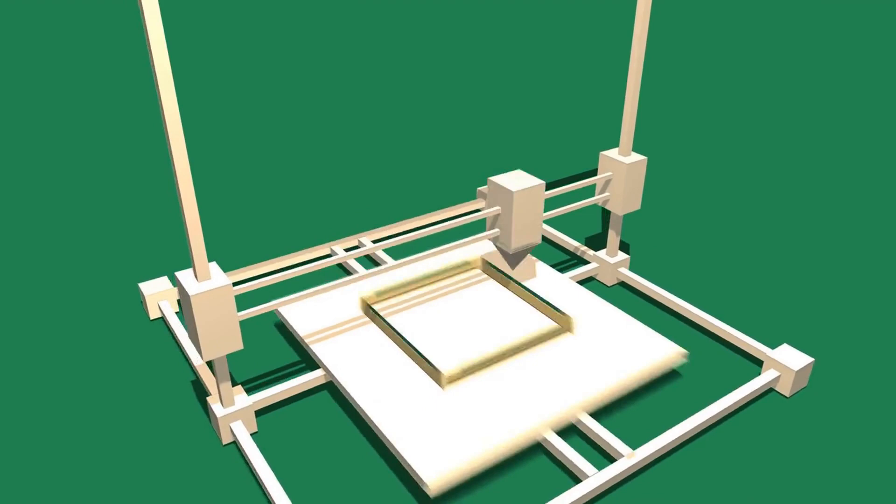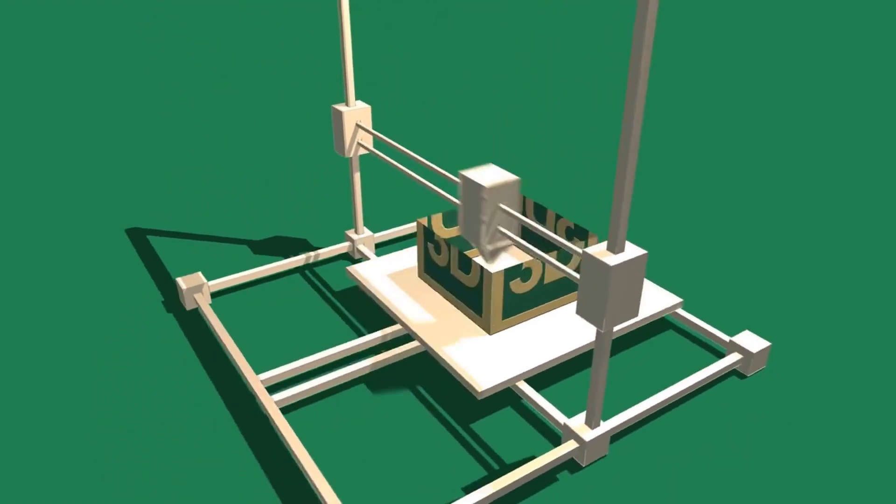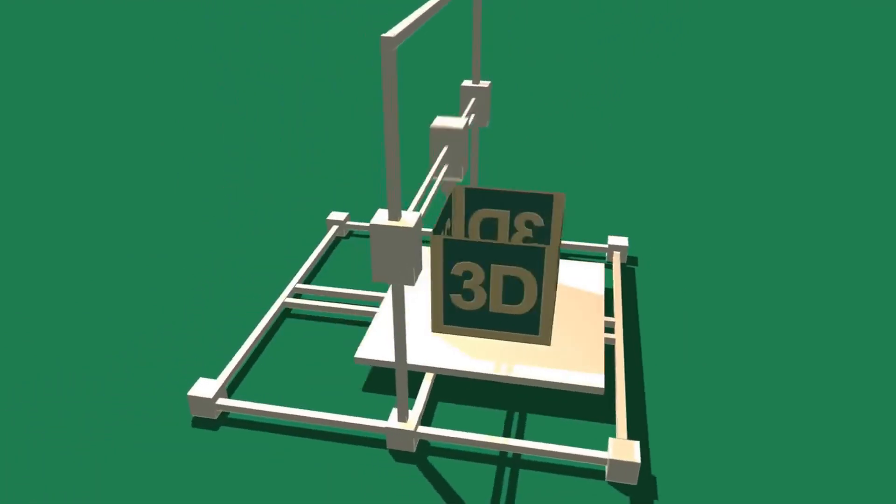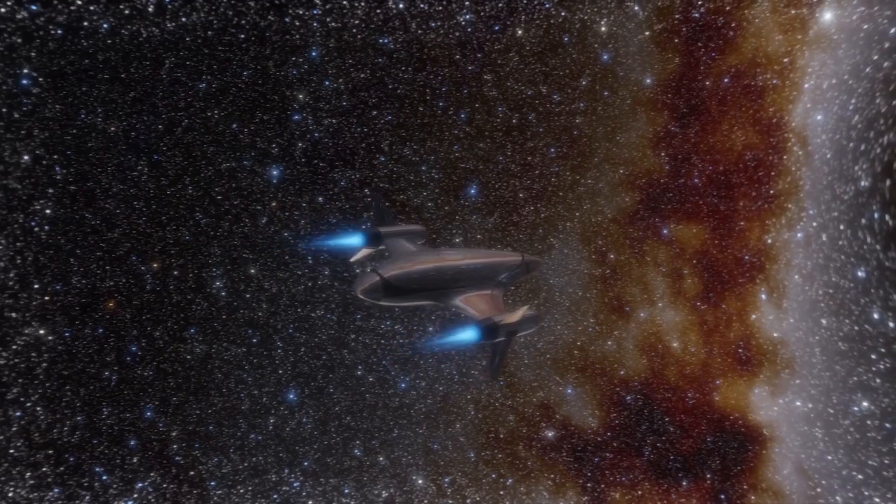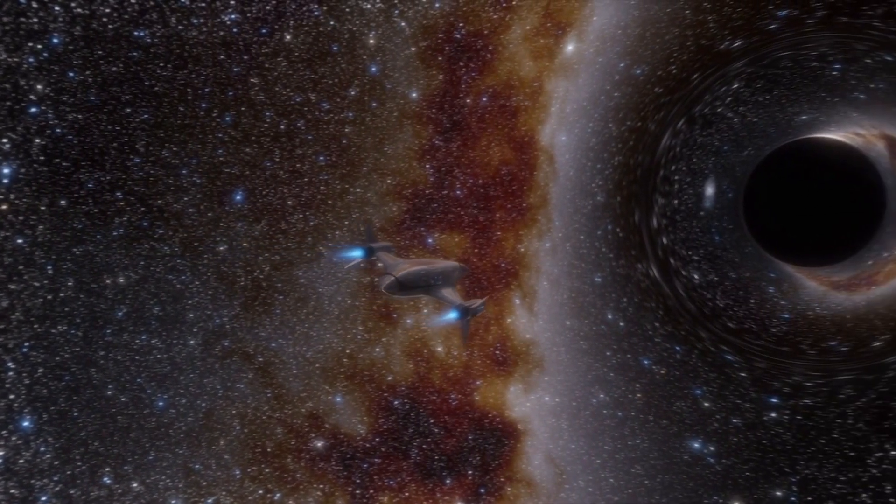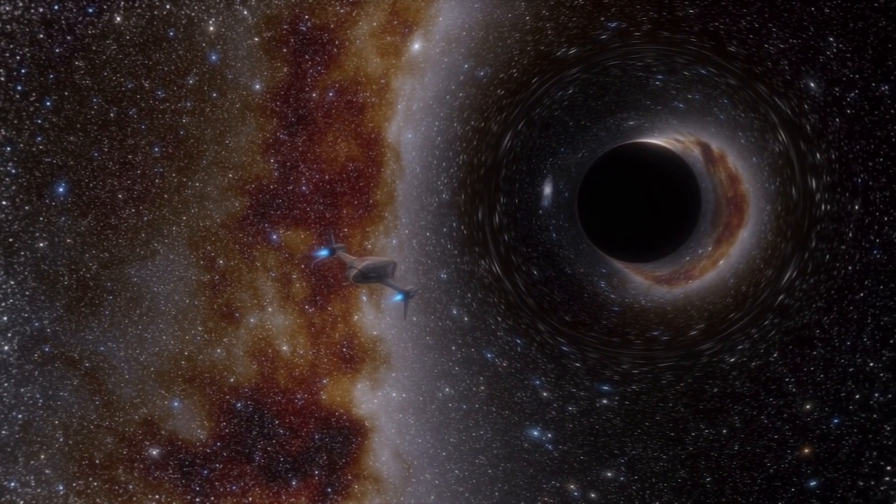This theory is based on the concept of the holographic principle, which states that the information contained in a three-dimensional object can be represented on a two-dimensional surface. In the case of black holes, this two-dimensional surface is known as the event horizon, which is the boundary around the black hole beyond which nothing can escape.